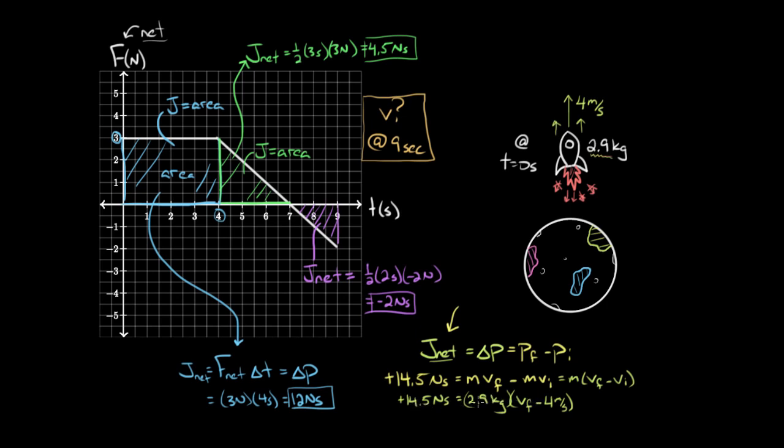So if I divide both sides by 2.9 kilograms, 14.5 over 2.9 is five, and that'll be newton seconds over kilograms, which has units of meters per second, and that's positive. That's gonna equal, the leftover over here is gonna be V final minus four meters per second, and now finally if I add four meters per second to both sides, I get that V final, somewhere up here, V final of this rocket is gonna be nine meters per second, so after nine seconds, it ended up going nine meters per second, that's just a numerical coincidence.